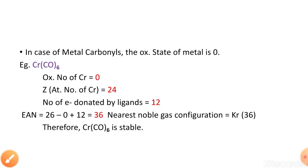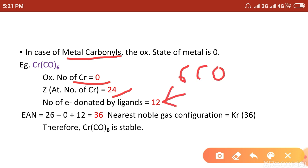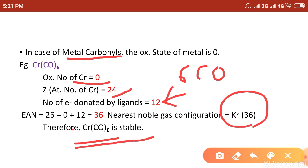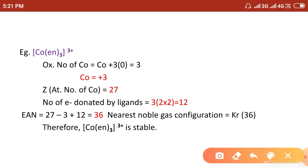Another metal carbonyl example: Cr(CO)₆. In metal carbonyls, the oxidation state of the central metal atom is always 0. Chromium's atomic number is 24. Six CO ligands donate 2 × 6 = 12 electrons. So EAN = 24 − 0 + 12 = 36, which corresponds to krypton. Therefore Cr(CO)₆ is also a stable complex.